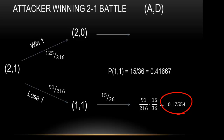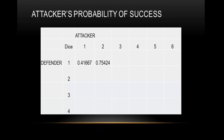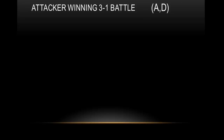If you went up the first branch, you already won, so the probability of winning from that path was 0.57870. Adding these two values together — because both branches lead to the attacker's success — gives us 0.75424. So we put that in the table and move on to the three-on-one.